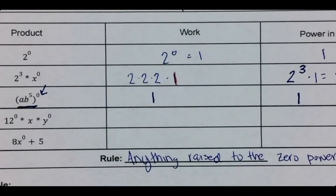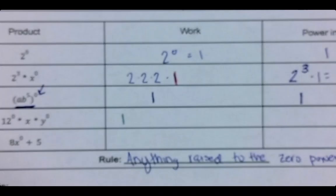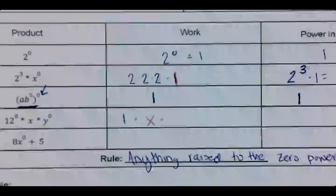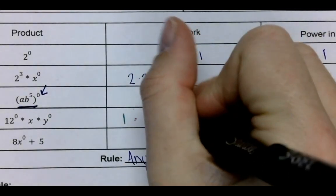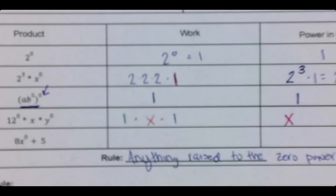Then we have 12 to the zero power. Well, that's one. x. So that's just an x. And then y to the zero power. Well, that's just one. One times x. Well, that's just x. Times one. That's just x.